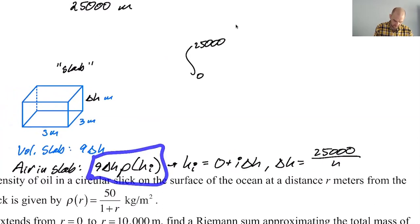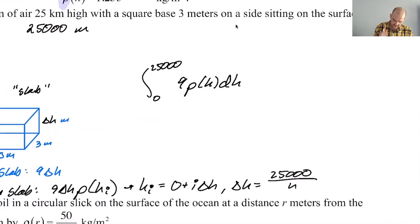And then the volume of the slab. Well, no, just the integral of this. I mean, it's this times the density. So nine, it becomes rho of H delta H, not delta H, DH. This is going to give us our answer that we're looking for.